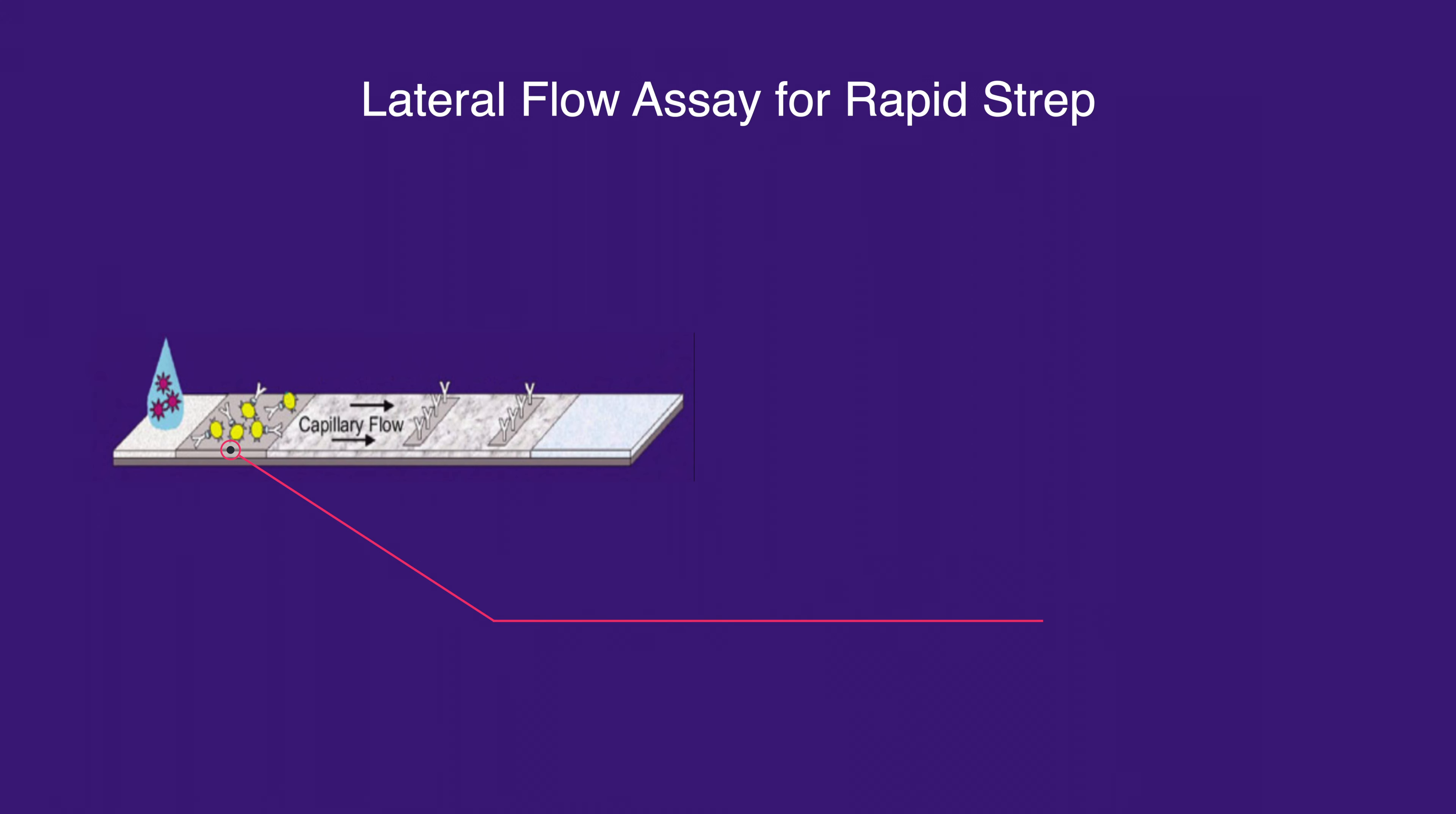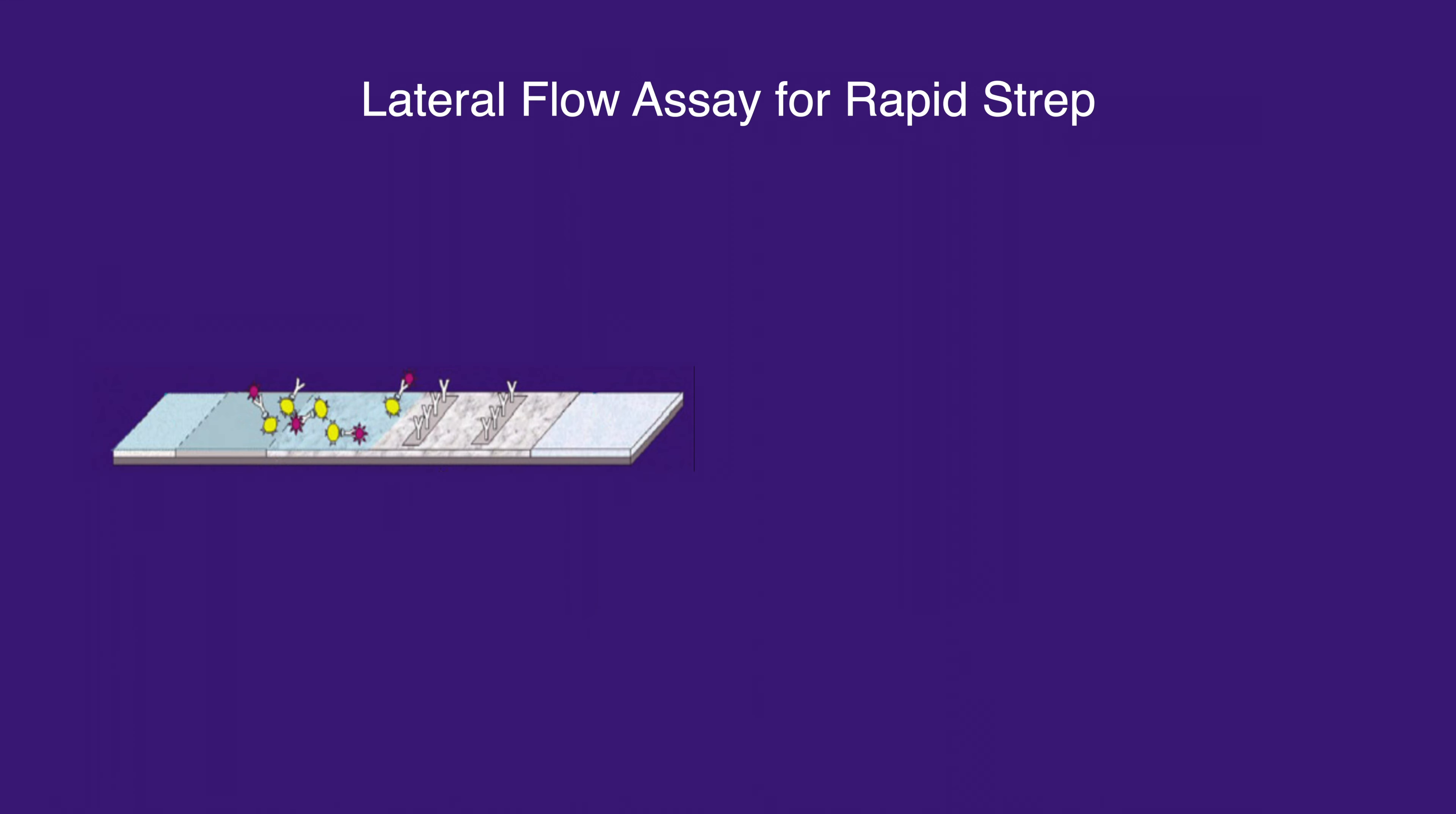If the specimen contains strep, or the purple circle, the anti-strep A antibody binds to the strep and drags it across the test strip via capillary action.